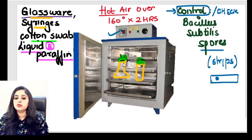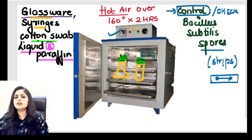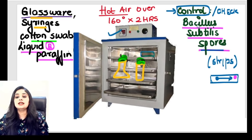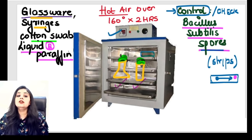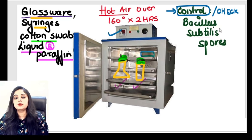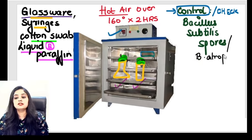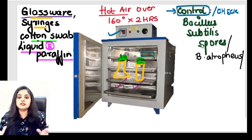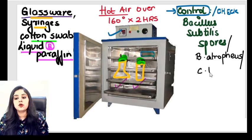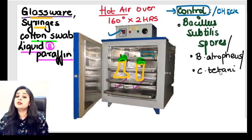For the hot air oven control, we can use Bacillus subtilis, also known as Bacillus atrophius (they are cousin brothers, same family), or Clostridium tetani. Either of these three may appear in an exam question. If both Bacillus and Clostridium are listed as options, prefer the Bacillus species. That's the hot air oven.